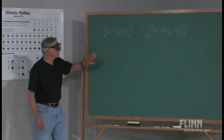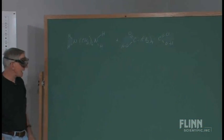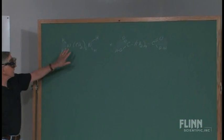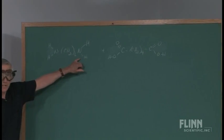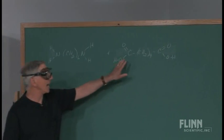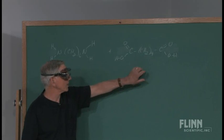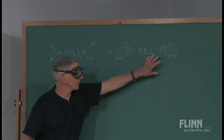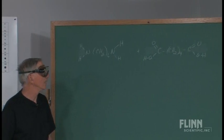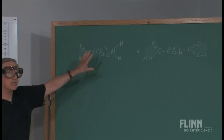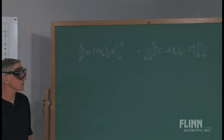This is going to be a reaction between a diamine — a chain of carbons with two amino groups, one on each end — and a dicarboxylic acid, a chain of carbon atoms with carboxylic acid groups on the end. This is the combination that made the original nylon, DuPont's nylon 66.